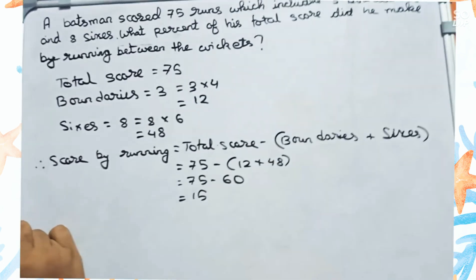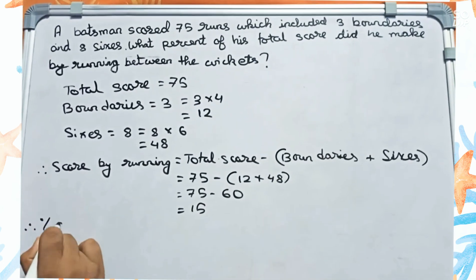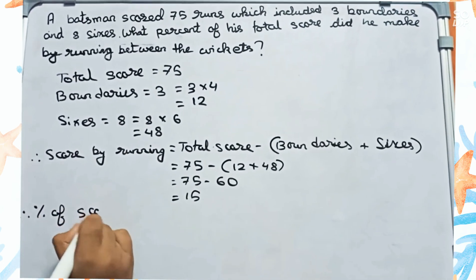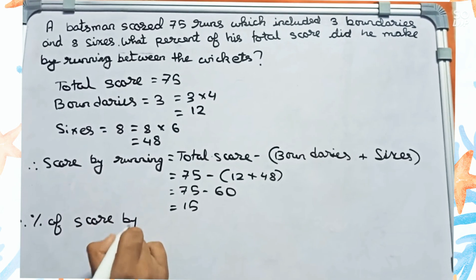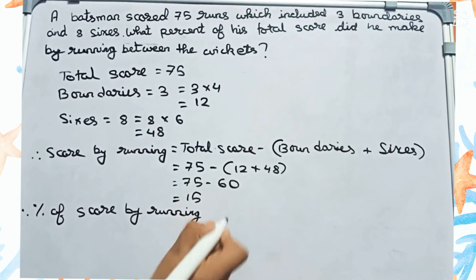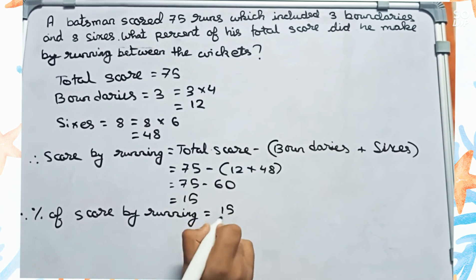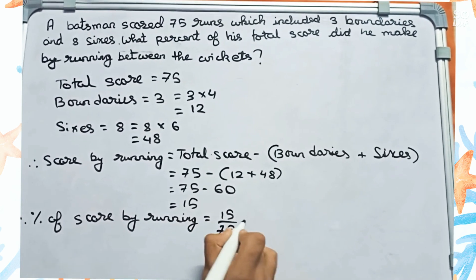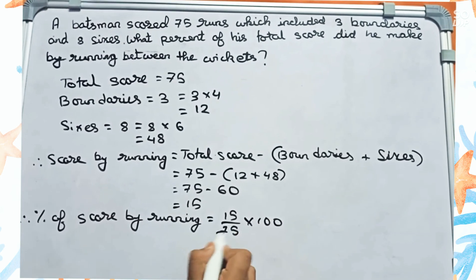Therefore, the percentage of score by running is 15 by 75 into 100. First, we simplify: divide 75 and 100 by 25 to get 3 and 4.